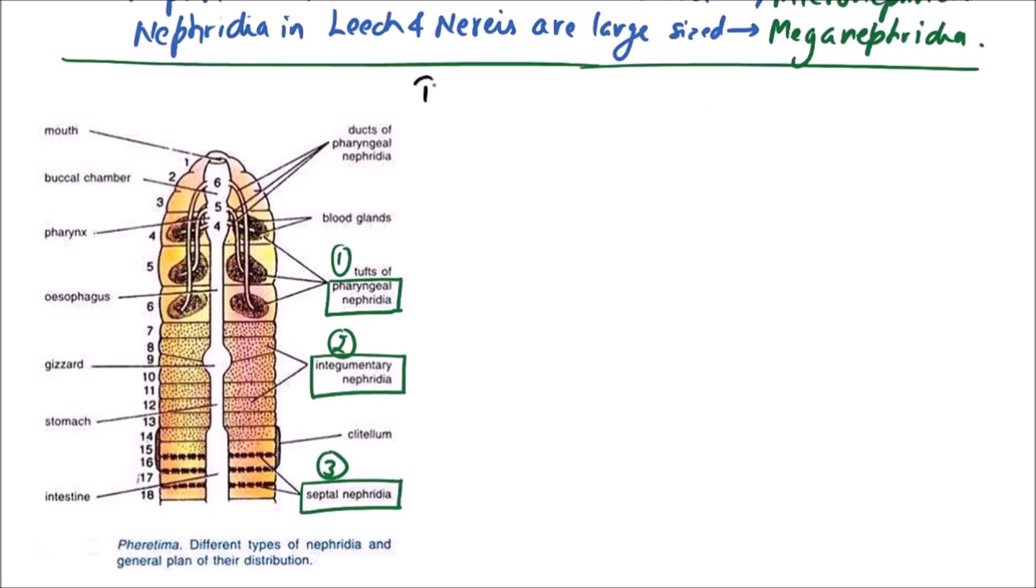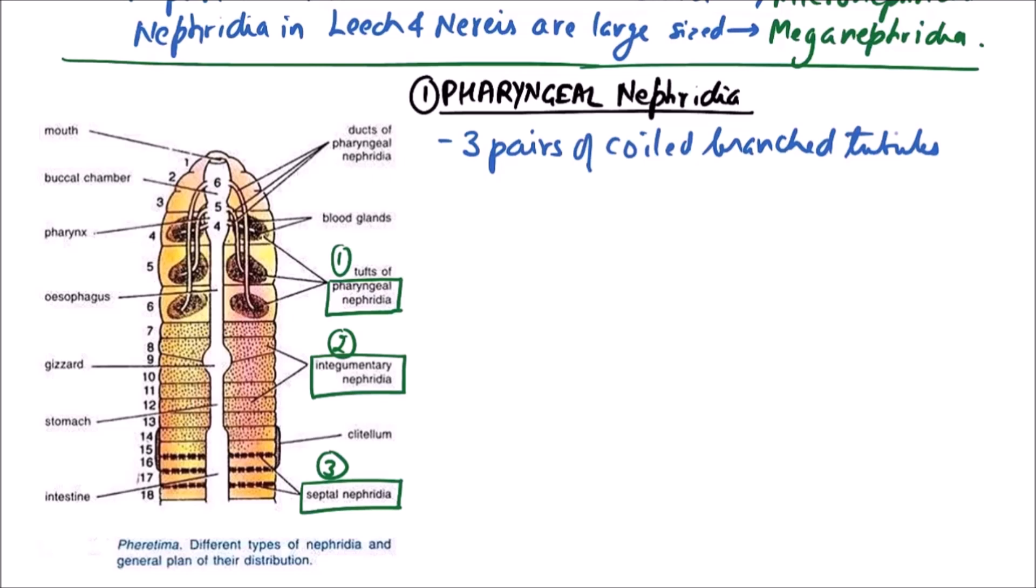First of all we will discuss the pharyngeal nephridia. Pharyngeal nephridia are basically three pairs of coiled branched tubules. One pair in each fourth, fifth and sixth body segments.